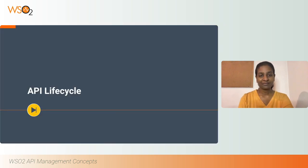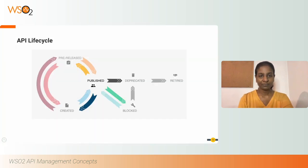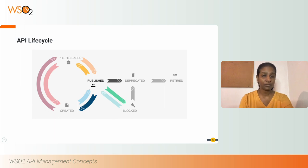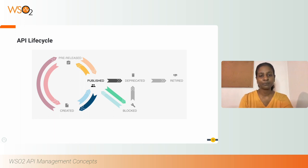API Lifecycle: An API lifecycle represents the stages that an API could go through from its creation to retirement. This is very important in the aspects of managing your APIs so that you would have a well-organized and smoothly running system.